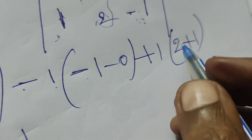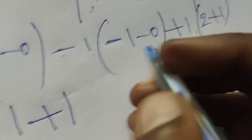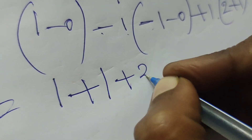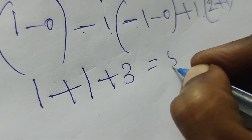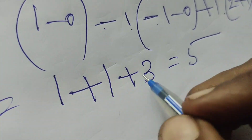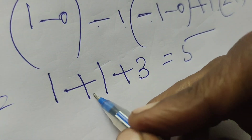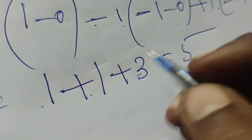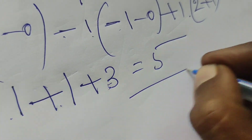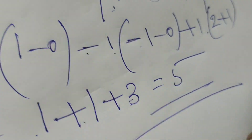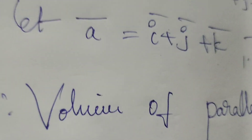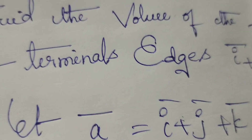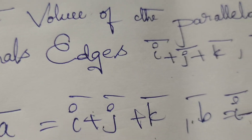Therefore, the total is 1 minus (-1) plus 1, which equals 1 plus 1 plus 1 equals 3 plus 1 plus 1 equals 5. The volume of the parallelepiped is 5 cubic units.